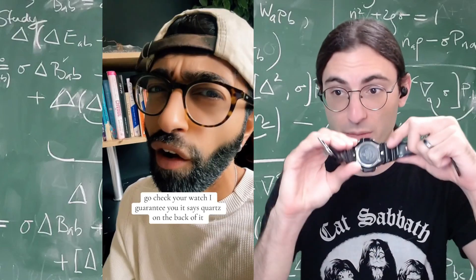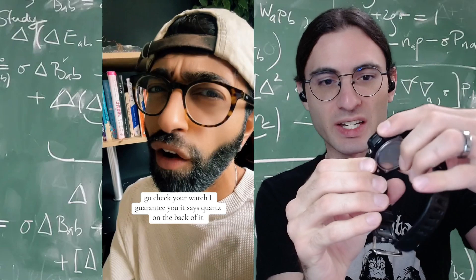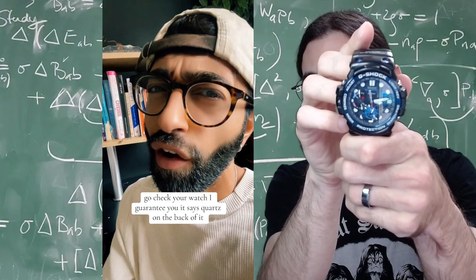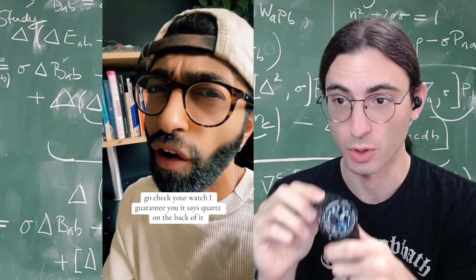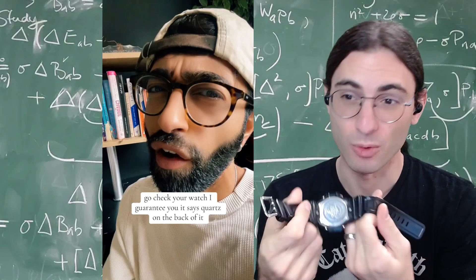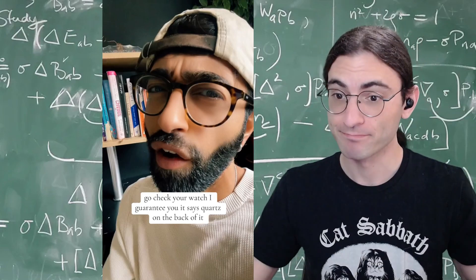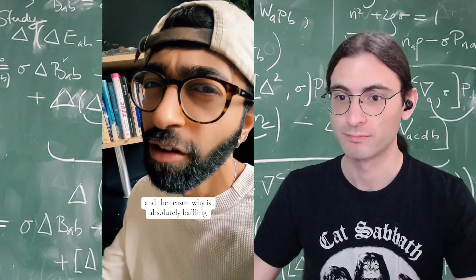So you won't be able to see this, but I took my watch off. This is a Casio. It's a G-Shock. It almost certainly does actually run from a quartz oscillator. However, it doesn't actually say quartz on the back of it. I checked. And the reason why is absolutely baffling.